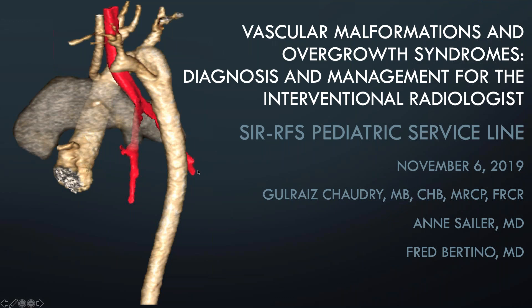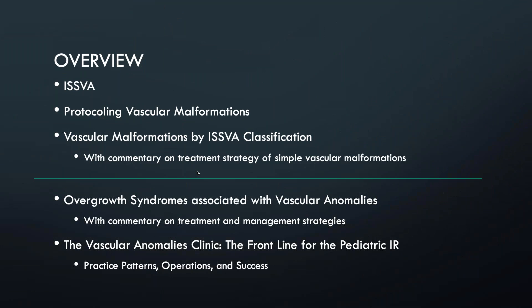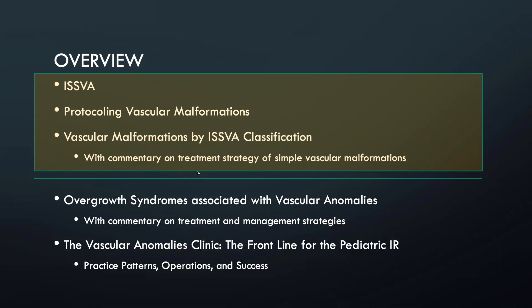We'll start our discussion of vascular anomalies and malformations by talking about it in two parts. I'll start by talking about the ISSVA classification, very briefly about protocoling vascular malformations and how to approach a reasonable diagnosis if you're on a diagnostic rotation or in a clinic. Then speaking about specific types of simple malformations with commentary on treatment. In our second part, Dr. Chaudhary will lead us through overgrowth syndromes associated with vascular anomalies, followed by a discussion on creating a vascular anomalies clinic.